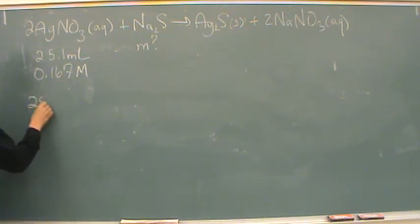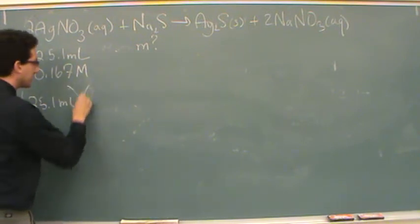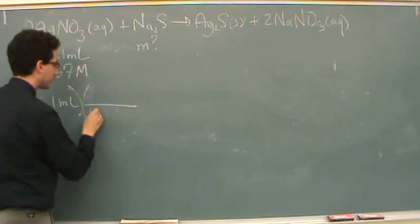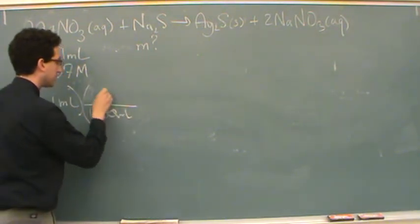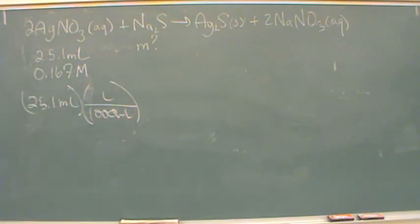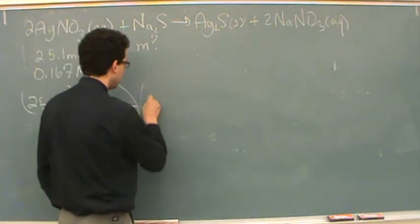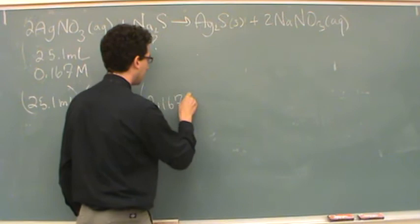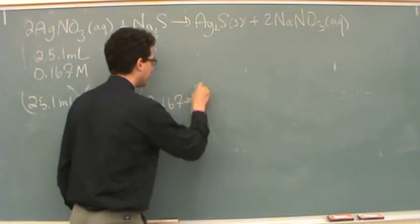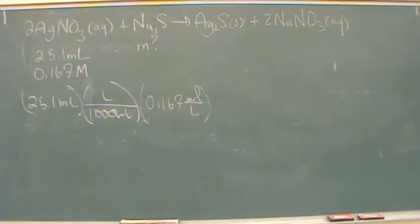So 25.1 milliliters. Let's change this to liters right off. So it's 1,000 milliliters per liter. And then the 0.167, that's moles per liter. Now all the liters are gone. All the milliliters are gone. Just moles are that thing.